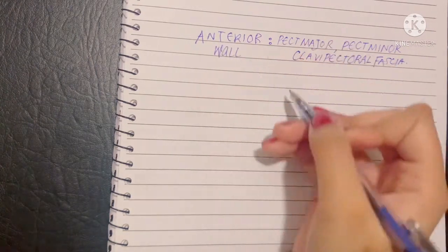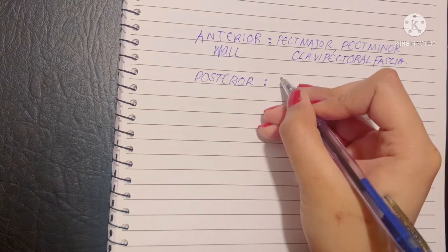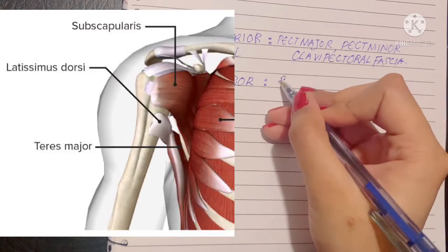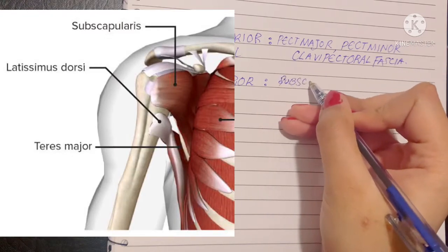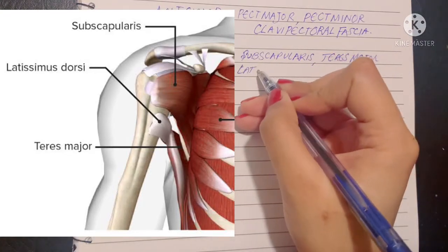Moving on, let's talk about the posterior wall. Posteriorly, we have the muscles covering the costal surface of the scapula, and these muscles are the subscapularis, teres major, and the latissimus dorsi that was passing from the inferior angle of the scapula.